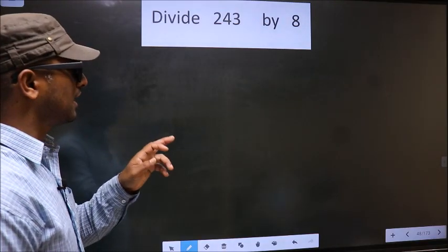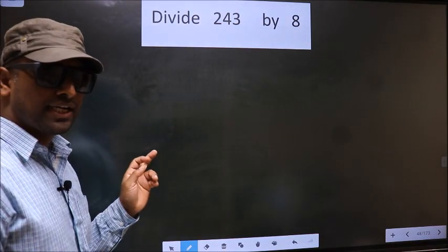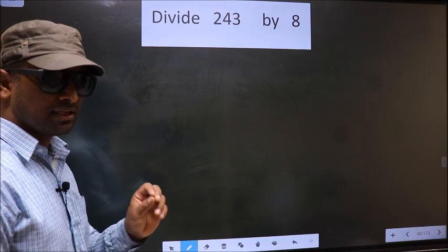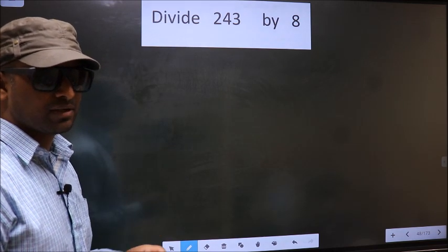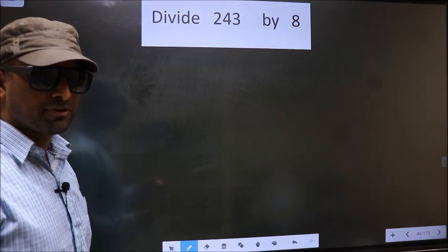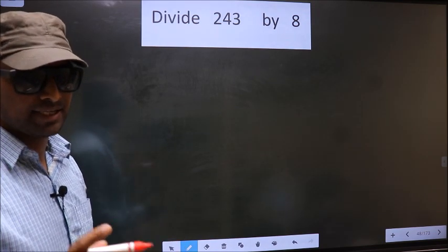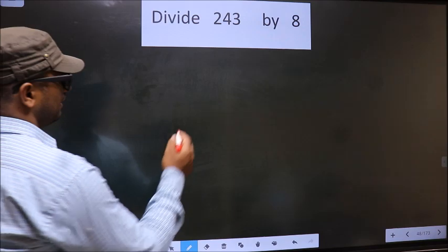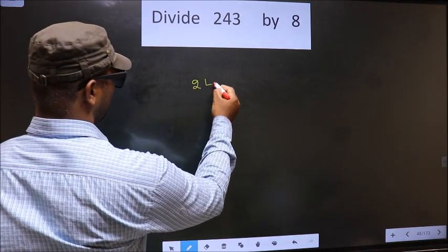Divide 243 by 8. While doing this division, many do this mistake. What is the mistake that they do? I will let you know, but before that we should frame it in this way: 243 divided by 8.